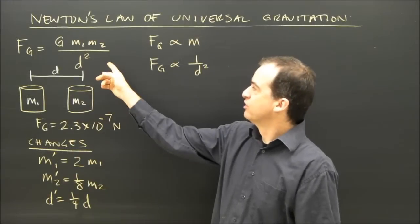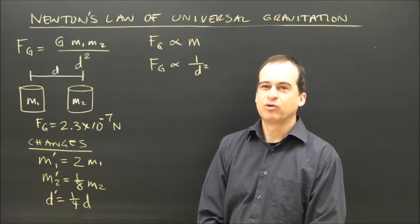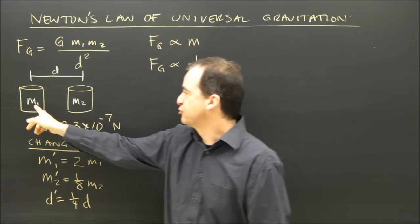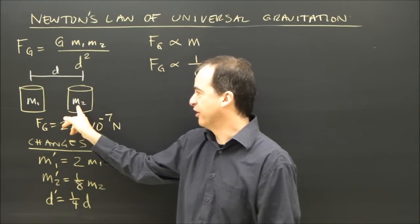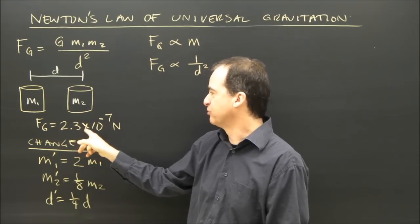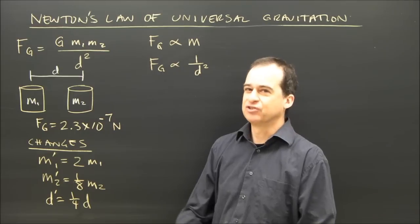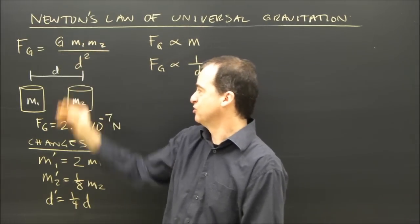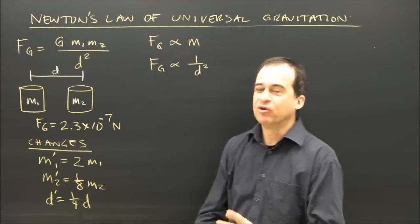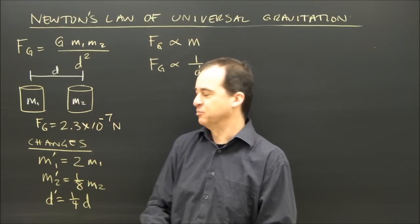Let's look at Newton's law of gravitation in a different way. We're going to look at it and use it as a ratio. For instance, I have two objects here and the force of gravity between them is 2.3 times 10 to the negative 7 newtons — not a lot of gravity. I can calculate that using this formula, but what I want to know is what's going to happen if I make some changes to this system.